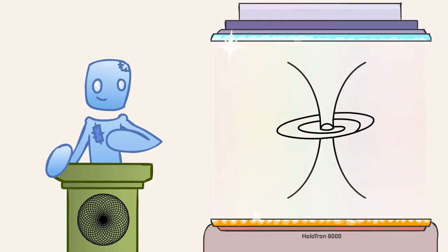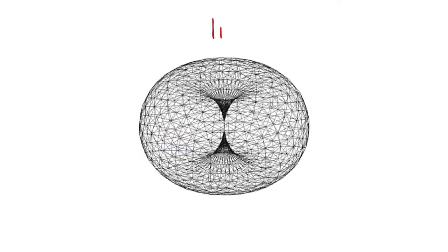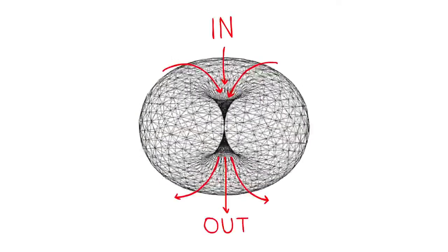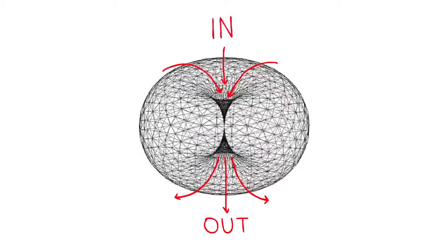You know how black holes absorb light and matter and pretty much everything? That light obviously must go somewhere. The laws of a toroidal field dictate that what goes in must come out and what goes out must come back in.